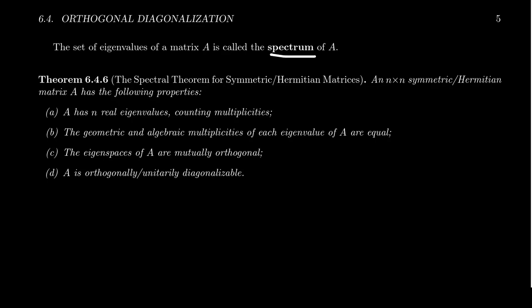So the spectrum of the matrix, or sometimes called the spec of A for short, is just a set of all the eigenvalues of that matrix. And so a spectral theorem in linear algebra means it's a theorem about eigenvalues. The spectral theorem of symmetric and Hermitian matrices is a way of categorizing or classifying what the eigenvalues of a symmetric or Hermitian matrix is going to be.